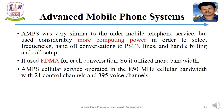AMPS was very similar to the older mobile telephone service but used considerably more computing power in order to select frequencies, handoff conversations to PSTN lines, and handle billing and call setup. It used FDMA for each conversation, so it utilized more bandwidth.